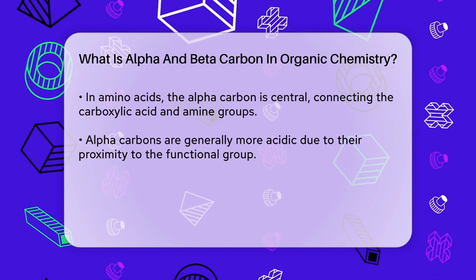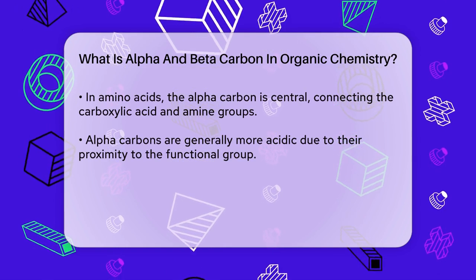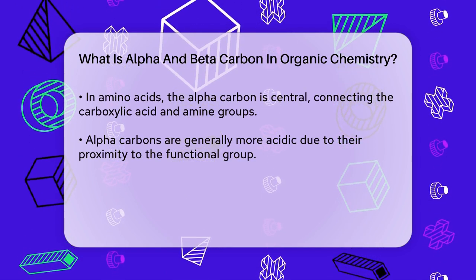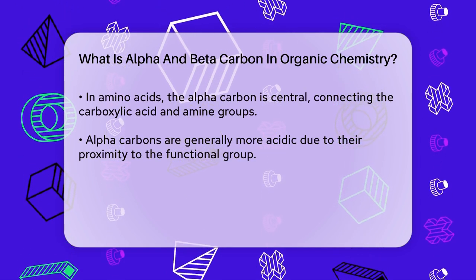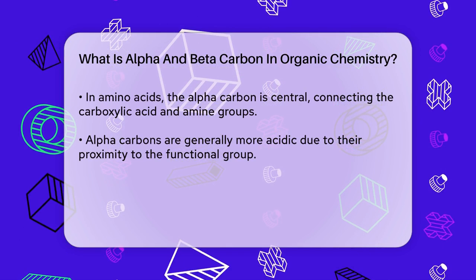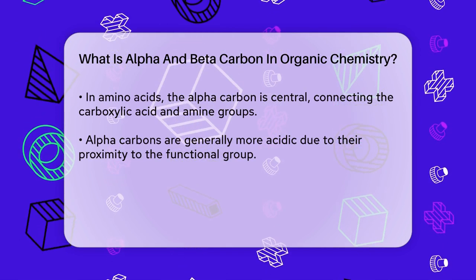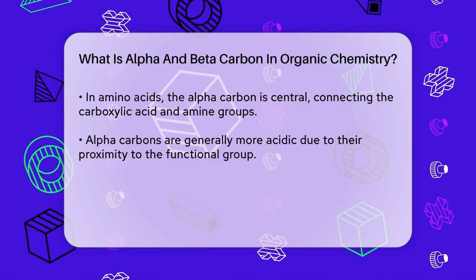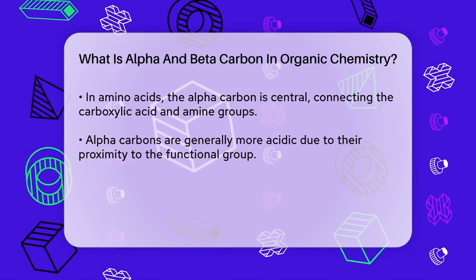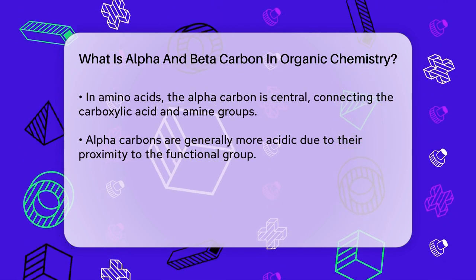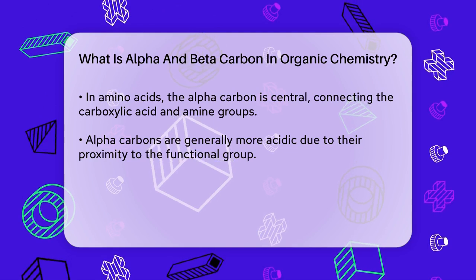In amino acids, for instance, the alpha carbon is the central carbon that has both the carboxylic acid group and the amine group attached to it. This alpha carbon plays a crucial role in the structure and function of proteins.